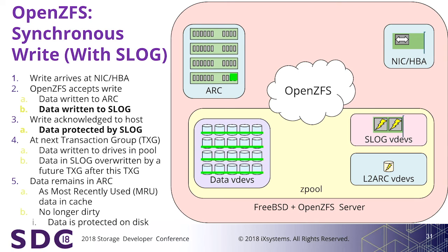A question was raised: the assertion that large writes can go directly to the pool, and there is a log bias setting you can set per dataset. With FreeBSD and OpenZFS in FreeNAS, not many people play with the log bias setting. If you do have a slog, everything does go through the slog — it doesn't bypass. It will bypass if it's using the ZIL directly, and there is a setting for that.